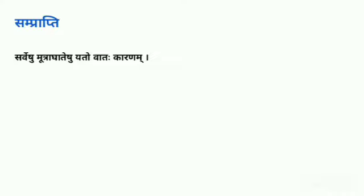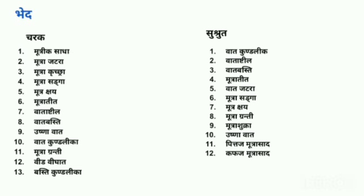Sarveshu Mutraghateshu Yato Vata Kharanam. Vata is the main factor responsible for Mutraghata, because obstruction to the flow of urine or retention of urine through Vegadharana are mainly responsible for the Pratiloma Gati of Vayu. This Pratiloma Gati of Vayu produces different types of symptoms and manifestations. According to Charaka there are 13 types of Mutraghata, and according to Sushruta there are 12.